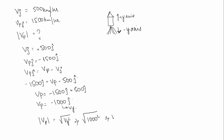That is root of 1000 squared, which is 1000 kilometer per hour. So the magnitude of velocity of products is equal to 1000 kilometer per hour, and the answer is option A.